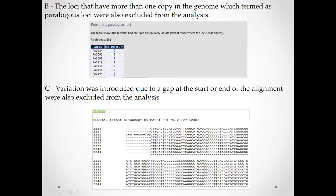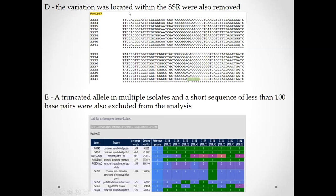Also, variation introduced at the gap at the start or end of the alignment is excluded. As shown in this example alignment, a gap at the start of alignment does not represent an indel insertion or deletion — we know a gap normally indicates an indel within the genome, but when the gap begins at the start or end of the alignment, this does not correspond to a true indel. It means misalignment, so we exclude it from the analysis.